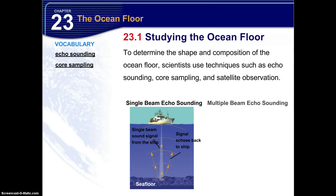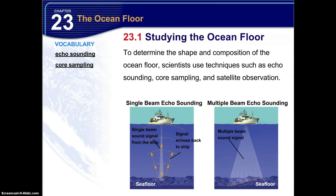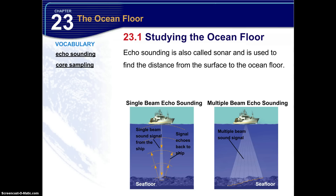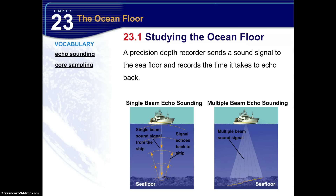The other type is multi-beam echo sounding. Multi-beam has multiple beams and can cover a larger area in a shorter amount of time. Echo sounding is also called sonar and is used to find the distance from the surface to the ocean floor. A precision depth recorder sends the sound signal to the sea floor and records the time it takes to echo back.